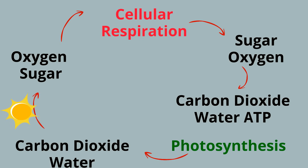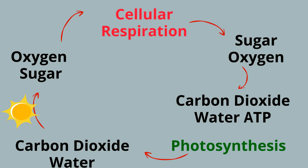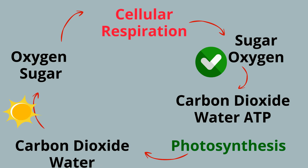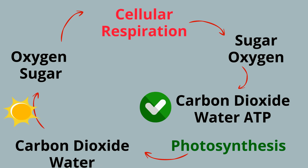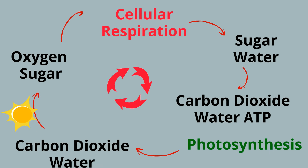In summary, photosynthesis takes carbon dioxide and water plus sunlight to create oxygen and sugar — which is exactly what cellular respiration needs. Cellular respiration takes the sugar and oxygen to create carbon dioxide and water plus ATP, which helps with photosynthesis. And this cycle repeats over and over again.